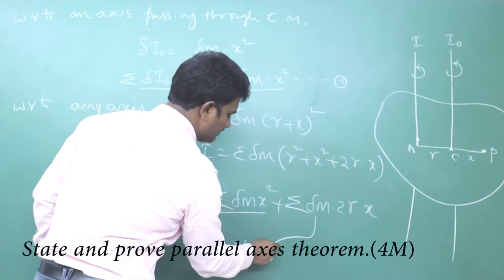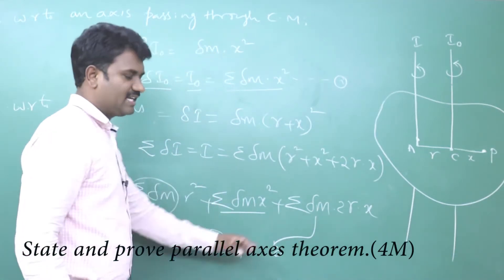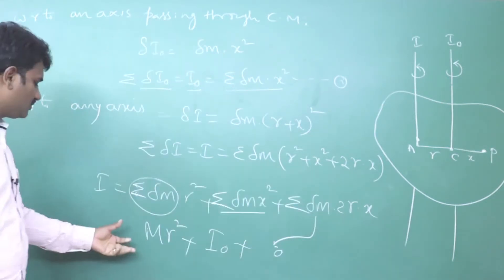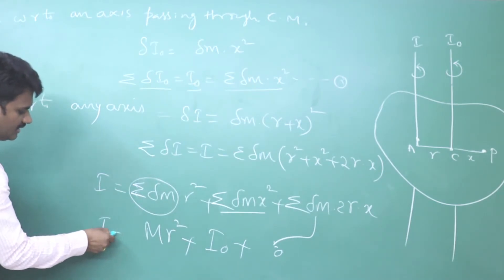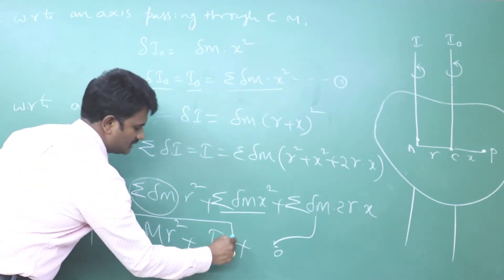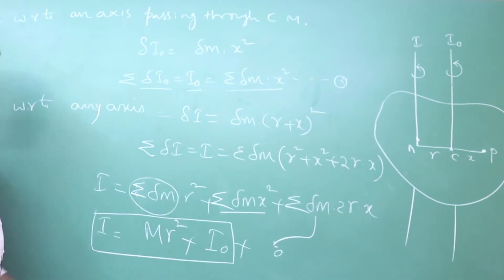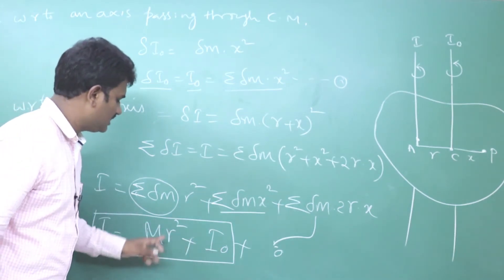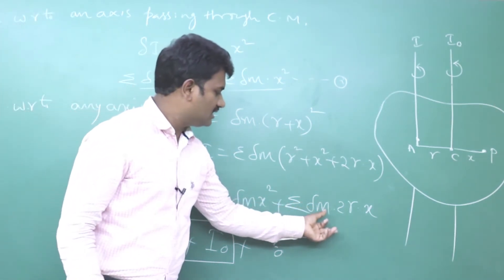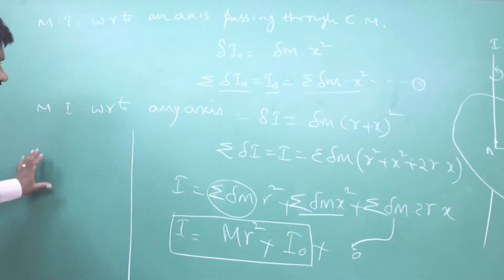The middle term becomes zero, which I will explain in a moment. So we are left with I = I₀ + Mr².